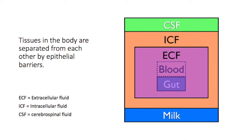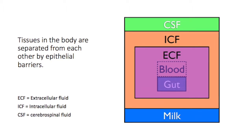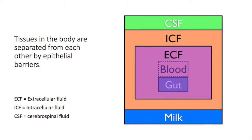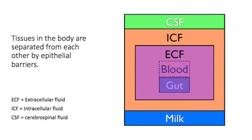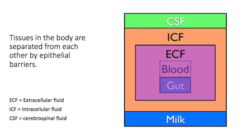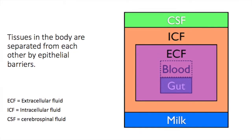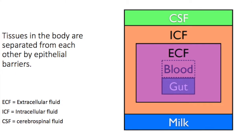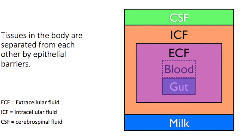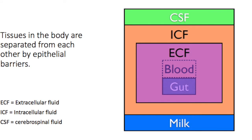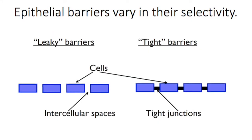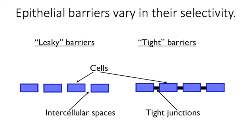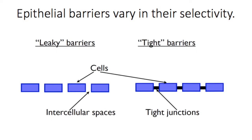We know that different tissues and fluids in the body vary in their composition. Some have lower or higher concentrations of specific ions compared to plasma, others have either a higher or a lower pH, and different tissues or fluids may have specific types of proteins in their composition. This differentiation is made possible by barriers between them that are composed of epithelial cells. These epithelial barriers can be classified as either leaky or tight, depending on how strictly they limit the ions and molecules that are able to cross them.